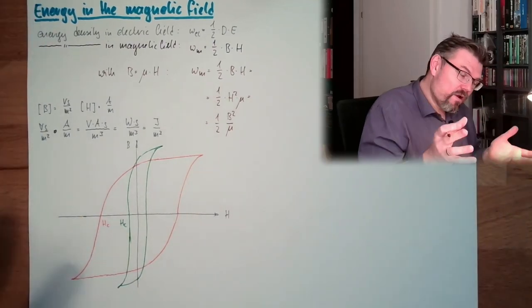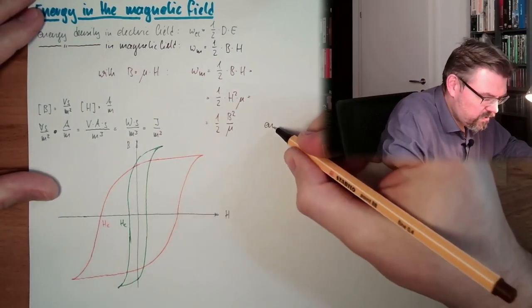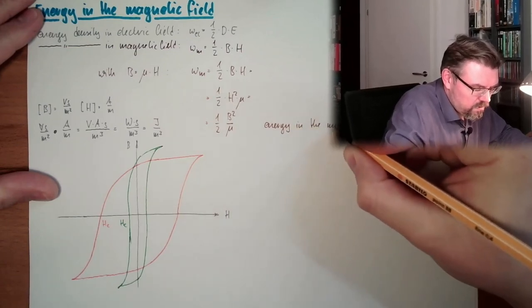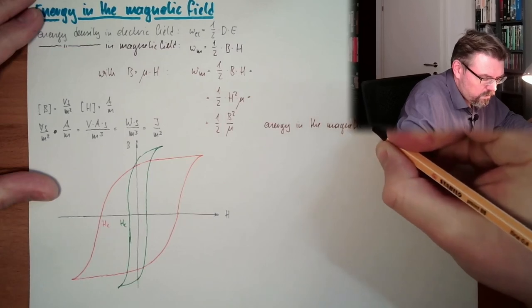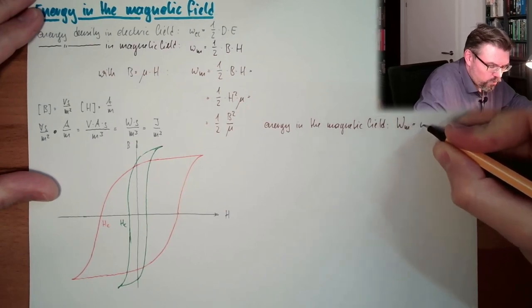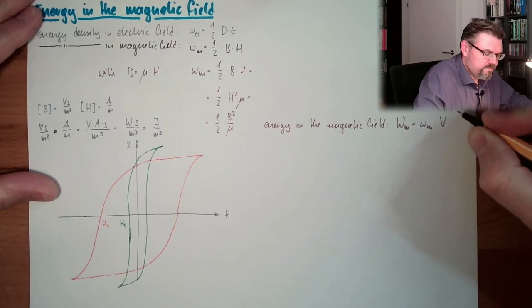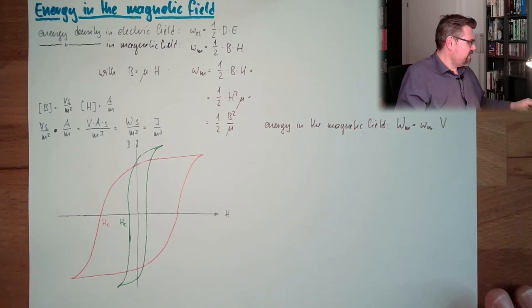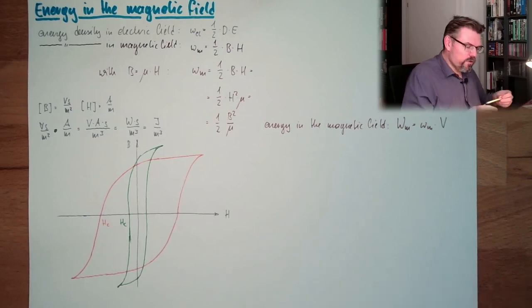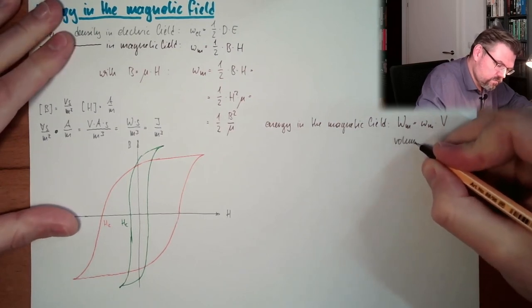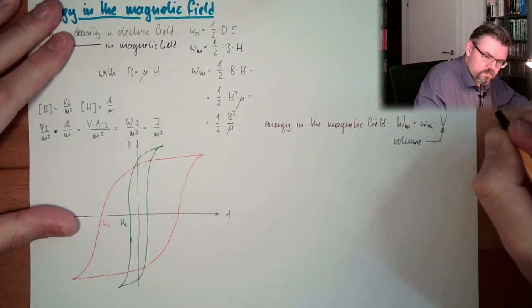And what if we have now the energy stored in a certain area of this field? So energy in the magnetic field WM equals small wm multiplied by v. And this is not the voltage. This is not the force. This here is, in this case, it's the volume. The volume of the area.